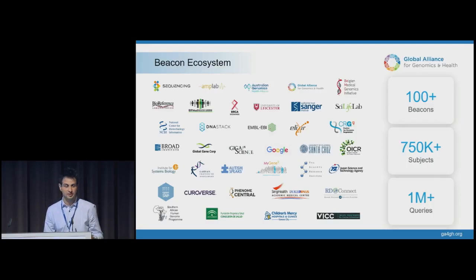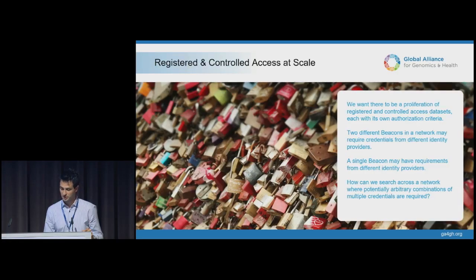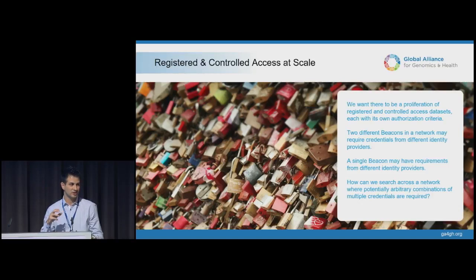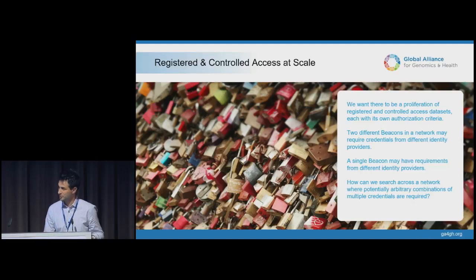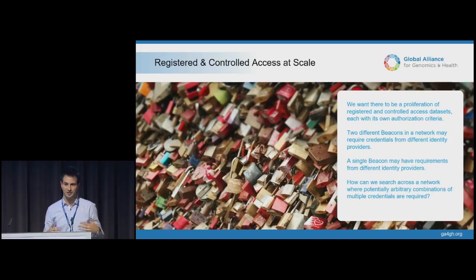We now have hundreds of beacons connected to networks, serving over 750,000 subjects worldwide and seeing over a million queries. We need to think about how this actually scales. We imagine and want to encourage the proliferation of lots of beacons that are both registered and controlled access, each with its own authorization controls. We got a taste of the complexity of matching data use with research identity and brokering access to datasets based on complex authorization rules — scenarios where you actually need multiple identities to do a federated analysis, with hundreds of beacons each requiring a different set of keys to unlock.